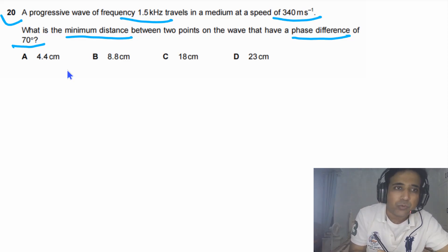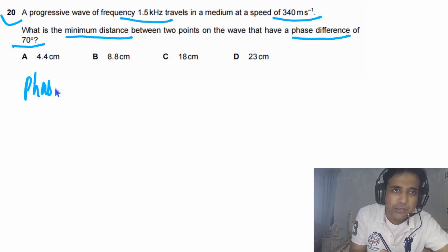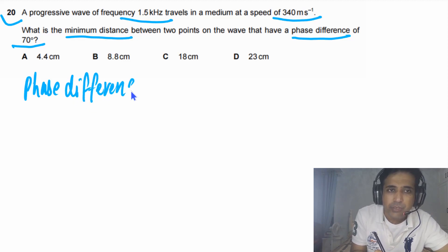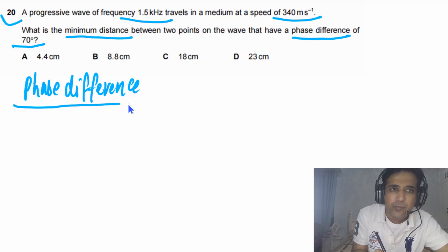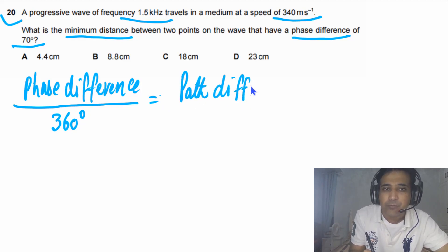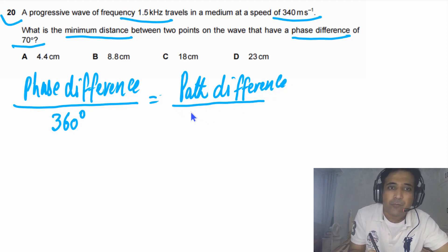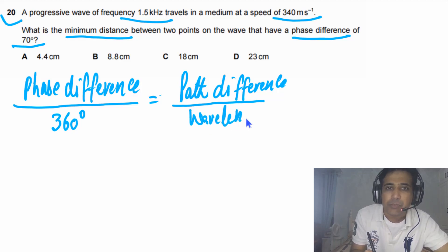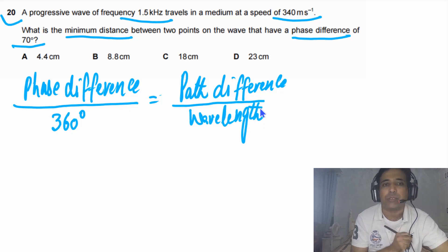In order to find the distance between two points, we need to understand the ratio between the phase difference and 360 degrees. This is equal to the path difference divided by the wavelength of the wave. So we can say this ratio is the main concept you need to understand.